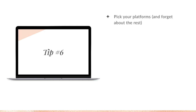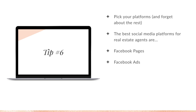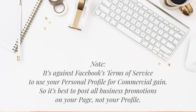Tip number six: pick your platforms and forget the rest. The best social media platforms for real estate agents are Facebook pages, Facebook ads, local Facebook groups, Instagram, and your Facebook profile. You can forget the rest of the social media platforms until you've mastered these ones. Side note: it is against Facebook's terms of service to use your personal profile for commercial gain, so always post your business promotions on your page, not your profile. Facebook has every right to shut your whole account down if you're promoting your business too much on your personal profile.